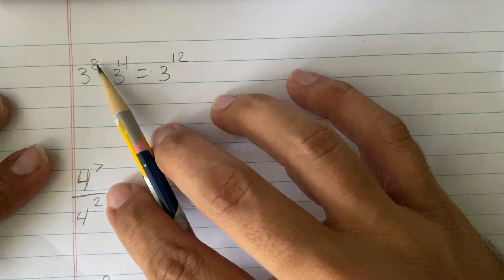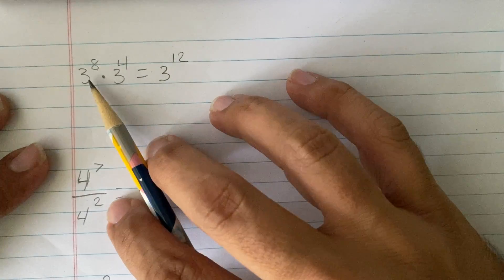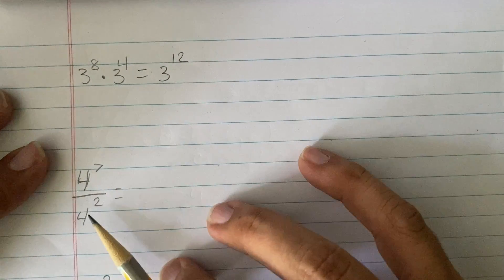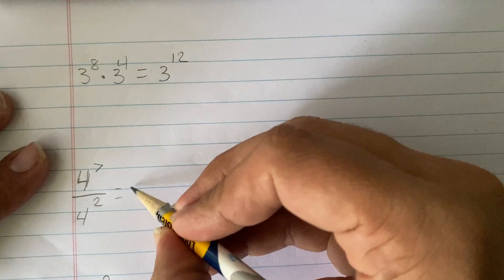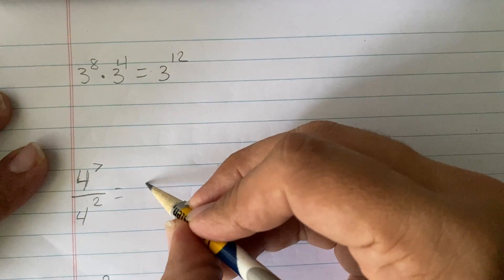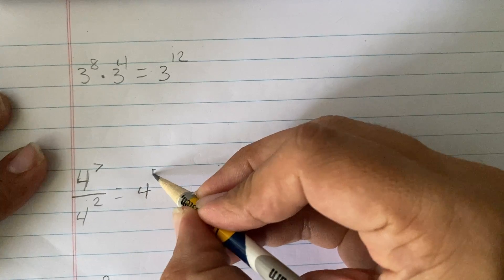Okay? Now, if the exponents add when you're multiplying, what do you think the exponents do when you divide? That's right, subtract. So, this would actually end up being 4 to the 5th.